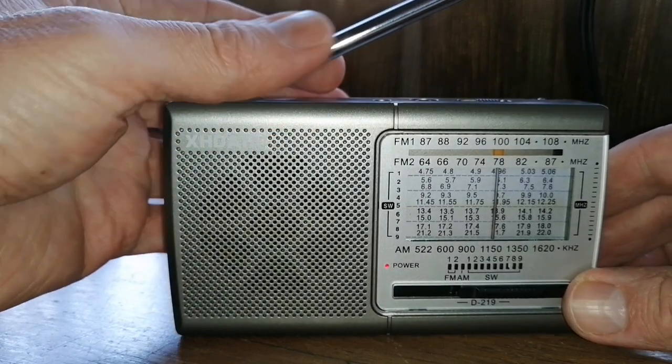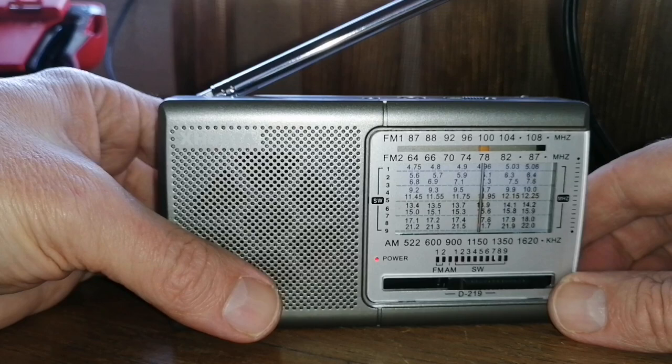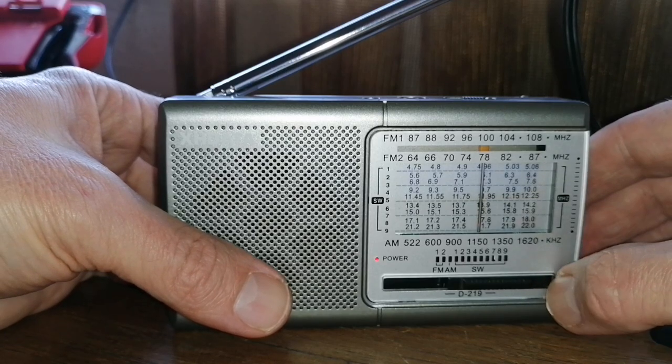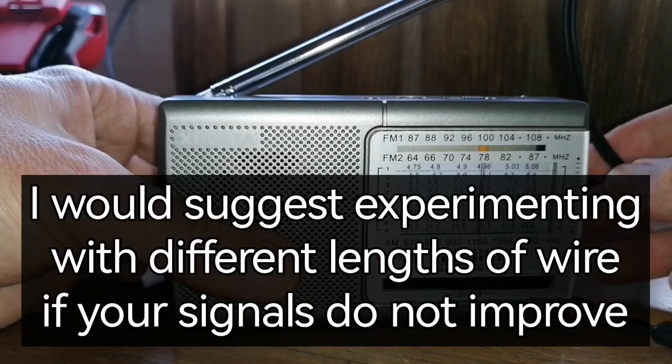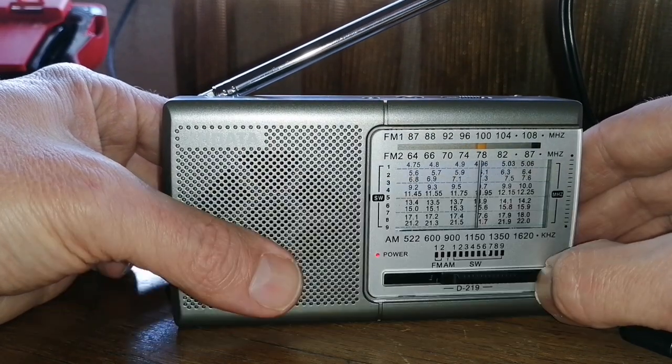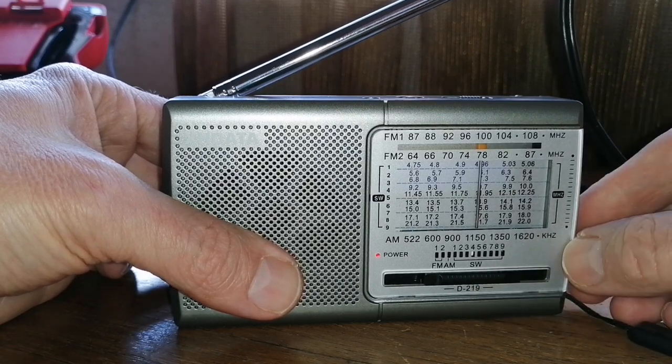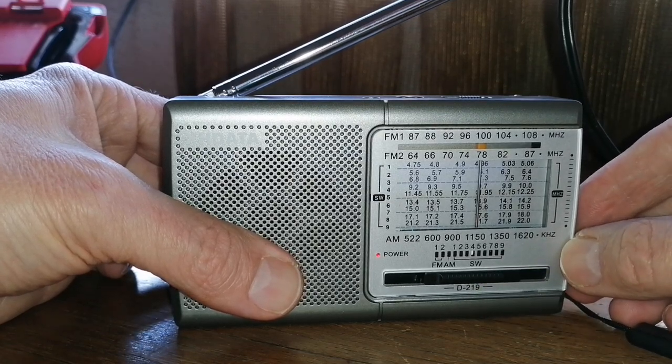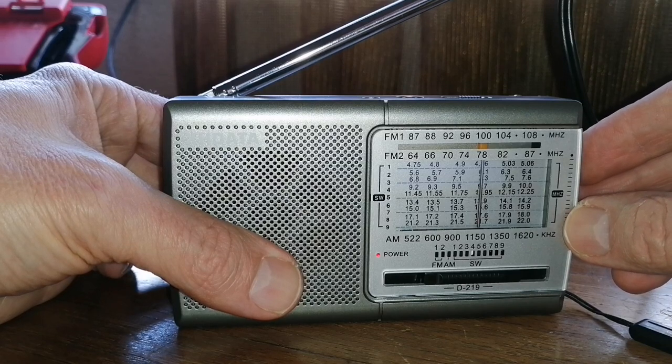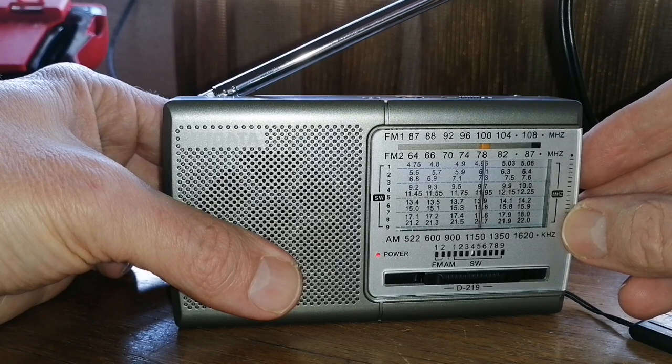You'll just need to experiment a bit with different radios because the wire sometimes will make a significant difference and sometimes not really. Sometimes the signal coming through the wire is just too strong. Like on the D219, I tried to pick up also NHK Japan, which is around here, and I just can't get it. Various other signals.